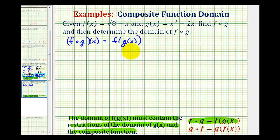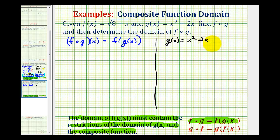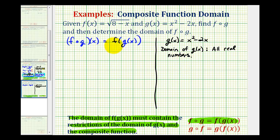Before we find our composite function, let's determine the domain of g of x, because this may affect the domain of our composite function. Well, g of x is just equal to x squared minus two x, which is a quadratic function. Therefore, the domain of g of x is just all real numbers. And because there are no restrictions on g of x, the inner function, we can just go ahead and find the domain of our composite function once we find it.